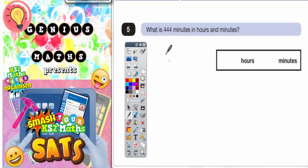Question 5. What is 444 minutes in hours and minutes? Well, obviously in one hour, that is 60 minutes. So we need to figure out how many lots of 60 minutes goes in 444 minutes.